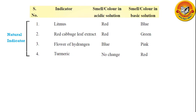Litmus naturally is purple in color. It is made into blue litmus or red litmus for convenience in detecting color change. When we put blue litmus paper in an acid, its color changes to red. When we put red litmus in acid, there is no change in color. Similarly, when we put red litmus in a basic solution, its color changes to blue. But if you put blue litmus in a basic solution, its color will remain blue.